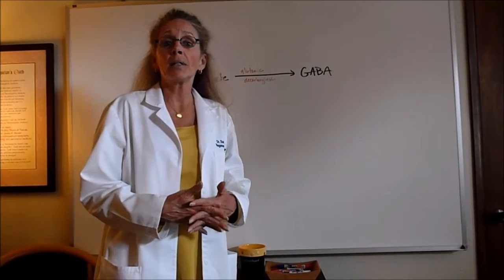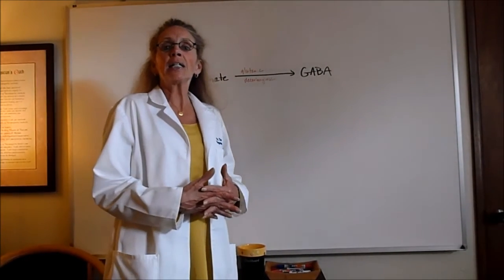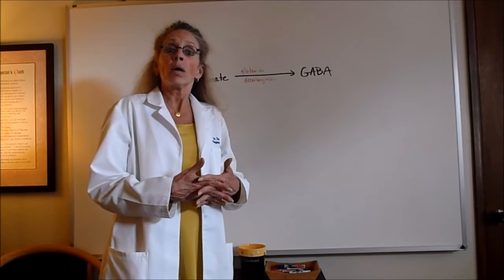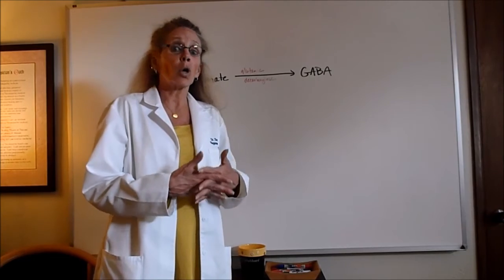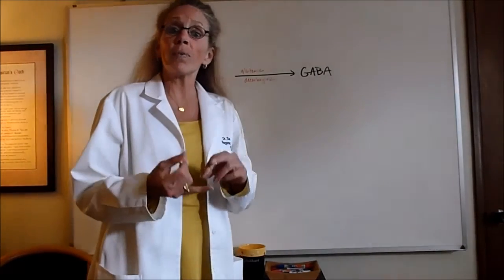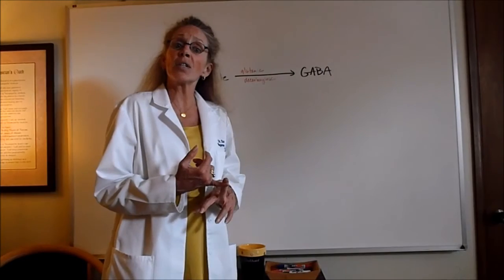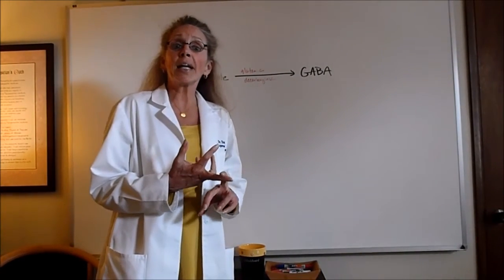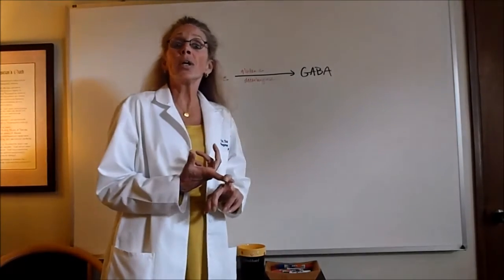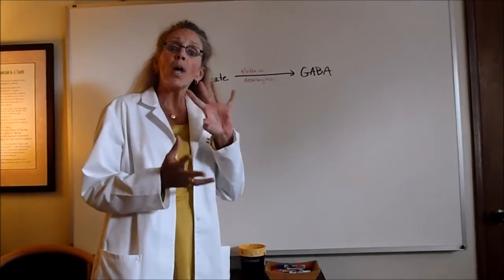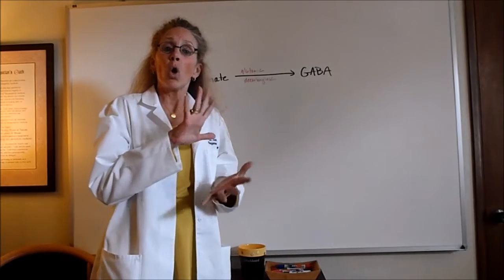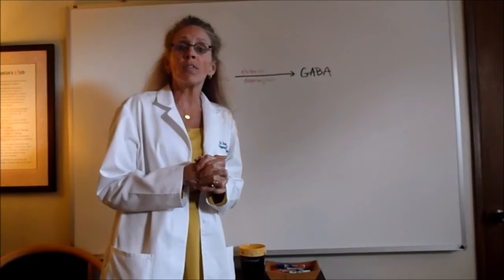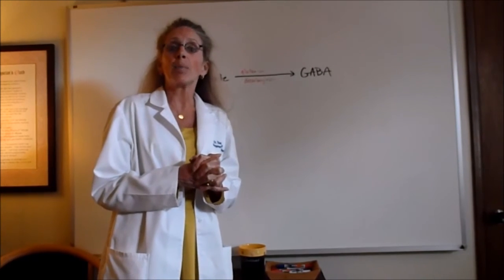When you have low GABA you oftentimes will experience anxiety, insomnia, depression. The way that you can test for low GABA or high glutamate activity is you can use serum fatty acids, serum organic acids, urine organic acids, and urine neurotransmitter tests. Through that you can figure out what neurotransmitters are out of balance. I've only chosen two of them to talk to you today about: glutamate and GABA.